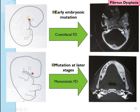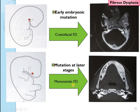At a later embryonic stage, when the pharyngeal arches have not yet formed, the mutation can give rise to craniofacial fibrous dysplasia where most of the head and neck bones may be involved. But if it occurs after the pharyngeal arches are formed and in a particular location, you can have monoostotic fibrous dysplasia.